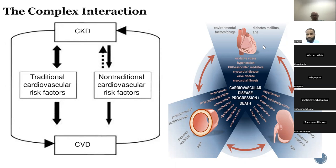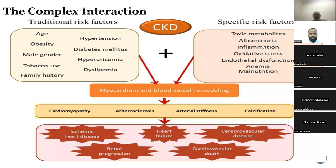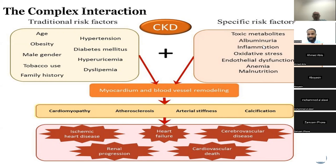This has led to the question: what else do we need to do? This complex interplay ultimately leads to both myocardial and vascular remodeling, which in turn leads to cardiomyopathy, arteriosclerosis, arterial stiffness, and calcifications seen in this group. This forms the basis for ischemic heart disease, heart failure, stroke, and even renal progression. A patient with left ventricular hypertrophy initially develops concentric hypertrophy; as myocytes begin to die, it turns to eccentric LVH, and over time leads to heart failure — these perpetuate each other.